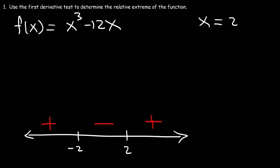Which of these two critical points is the relative maximum, and which one is the relative minimum? For x = -2, the function is increasing and then it decreases — that is a maximum. For x = 2, the derivative is negative first and then positive later — that is a minimum. That's a quick and simple way to determine the relative extrema of the function.